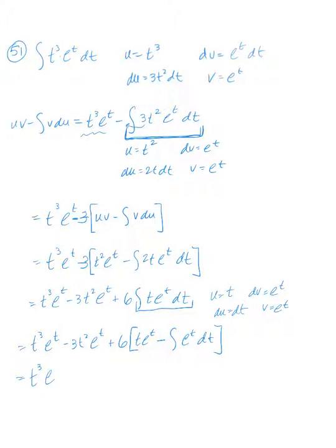So t cubed e to the t minus 3t squared e to the t plus 6t e to the t minus 6e to the t plus c.